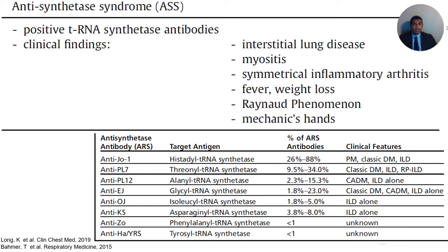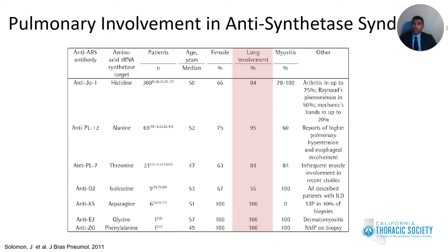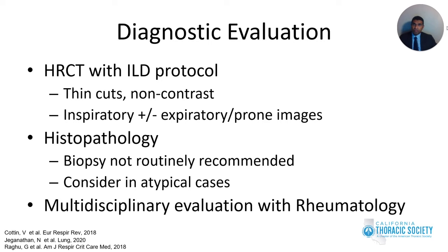Anti-synthetase syndrome patients have positive anti-synthetase antibody and a clinical triad of interstitial lung disease, myositis, and arthritis, and can have constitutional symptoms such as fever, weight loss, Raynaud's phenomenon, and mechanics hands. It is not necessary for all characteristics to be present simultaneously — patients may present with ILD and positive anti-synthetase antibodies and later develop myositis and arthritis. The common antisynthetase antibodies are JO1, PL7, and PL12. Anti-PL12, EJ, OJ, and KS antibodies may present with ILD alone without myositis or arthritis, and lung involvement is commonly seen across all types.